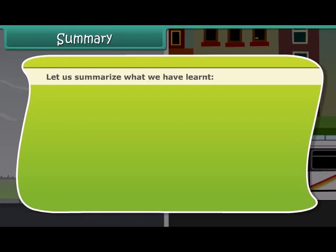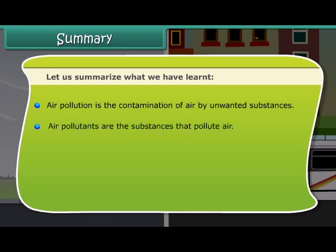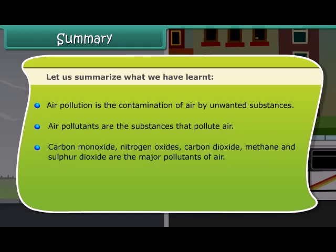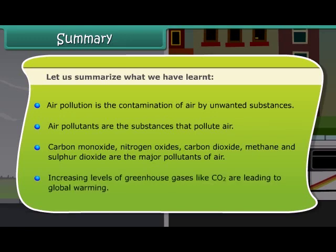Let us summarize what we have learned. Air pollution is the contamination of air by unwanted substances. Air pollutants are the substances that pollute air. Carbon monoxide, nitrogen oxides, carbon dioxide, methane, and sulfur dioxide are the major pollutants of air. Increasing levels of greenhouse gases like CO2 are leading to global warming.